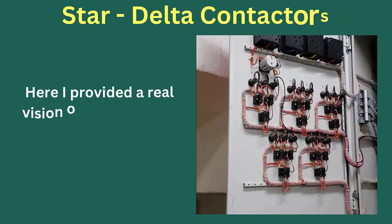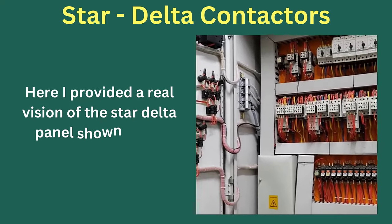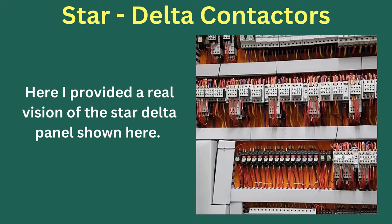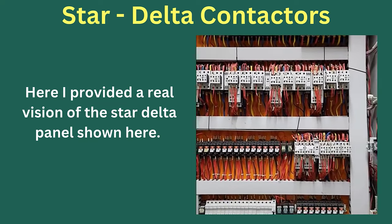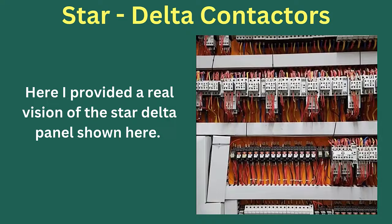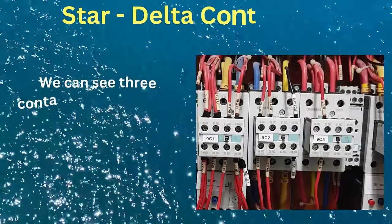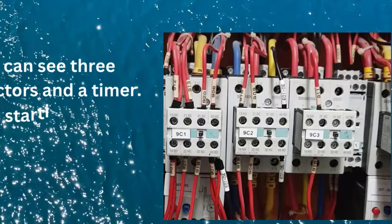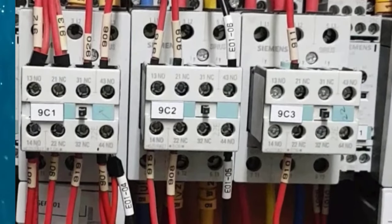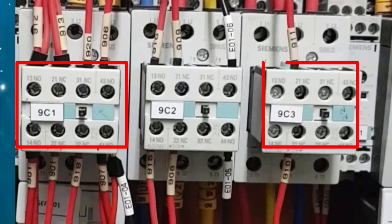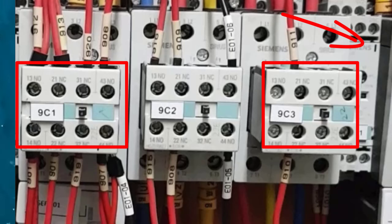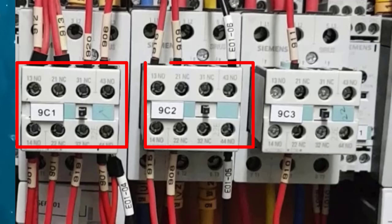Here is a real view of the star-delta panel. We can see three contactors and a timer. At the starting stage, contactors C1 and C3 close, and at the same time timer T1 is also energized. After a specified time, the timer activates: C2 closes and C3 releases. C1 is the permanent contactor.